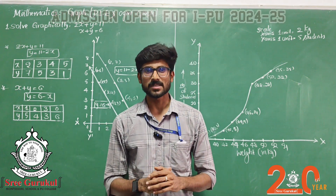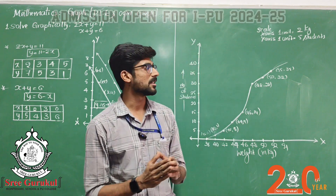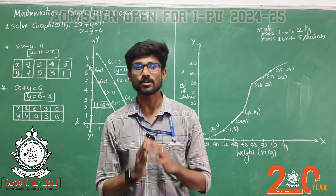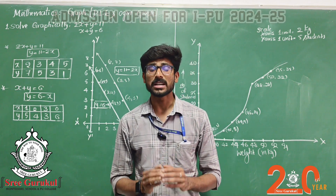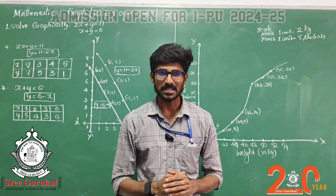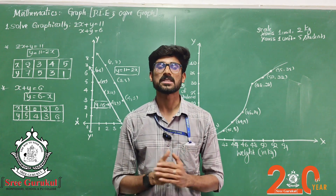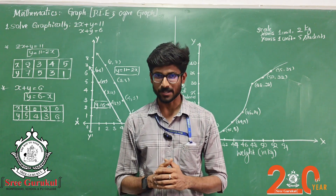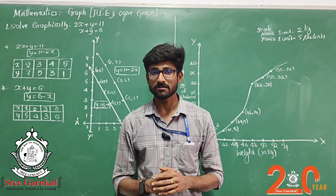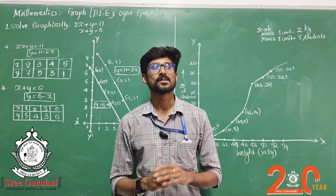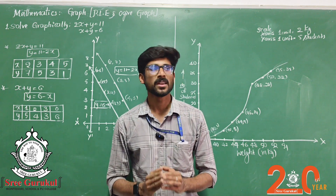Today I'm here to give some small tips about graphical representation — what you are supposed to take care of when you are plotting the graph. As you know, in the question paper we have seven marks for the graph: four marks from the chapter Pair of Linear Equations, and from Statistics we have the ogive graph, which is the most expected question. Altogether, seven marks for graphs.